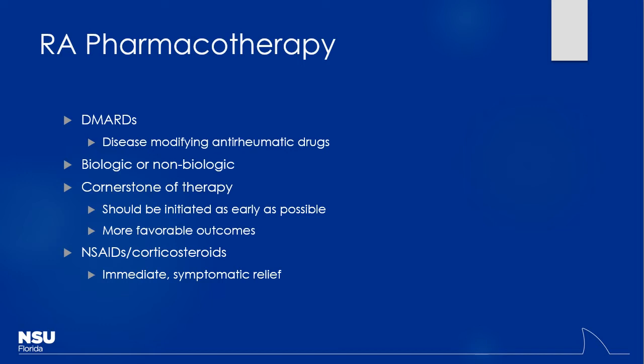Getting into our DMARDs — disease-modifying anti-rheumatic drugs — we're going to find two big categorizations: biologic and non-biologic. What's the difference? Biologic just means protein-based — that's where monoclonal antibodies come into play. When I say biologic, that means a protein versus just a simple chemical structure. So methotrexate would be non-biologic, and infliximab would be biologic.